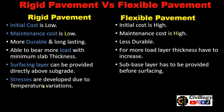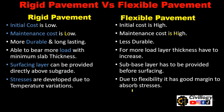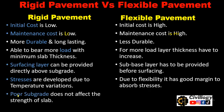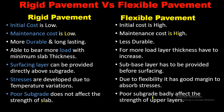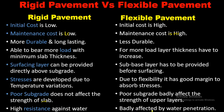In rigid pavement, stresses are developed due to temperature variations. In flexible pavement, due to its flexibility, it has a good margin to absorb stresses. In rigid pavement, poor subgrade does not affect the strength of the slab, as the slab acts as a bridge. However, poor subgrade badly affects the strength of the upper layers in flexible pavement. Rigid pavement has high resistance against water, whereas flexible pavement is badly affected by water penetration.